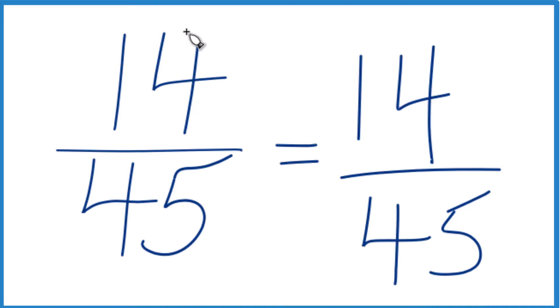It looks like at first maybe 7 will go into both, but 7, that goes into 14, but it doesn't go evenly into 45.